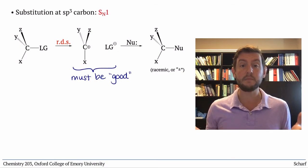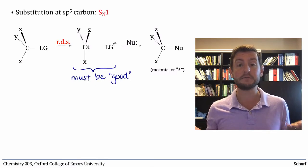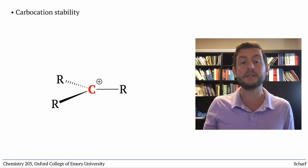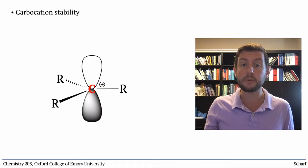So what makes some carbocations more stable than others? Carbocations have sp2 hybridized carbon atoms with empty P orbitals.